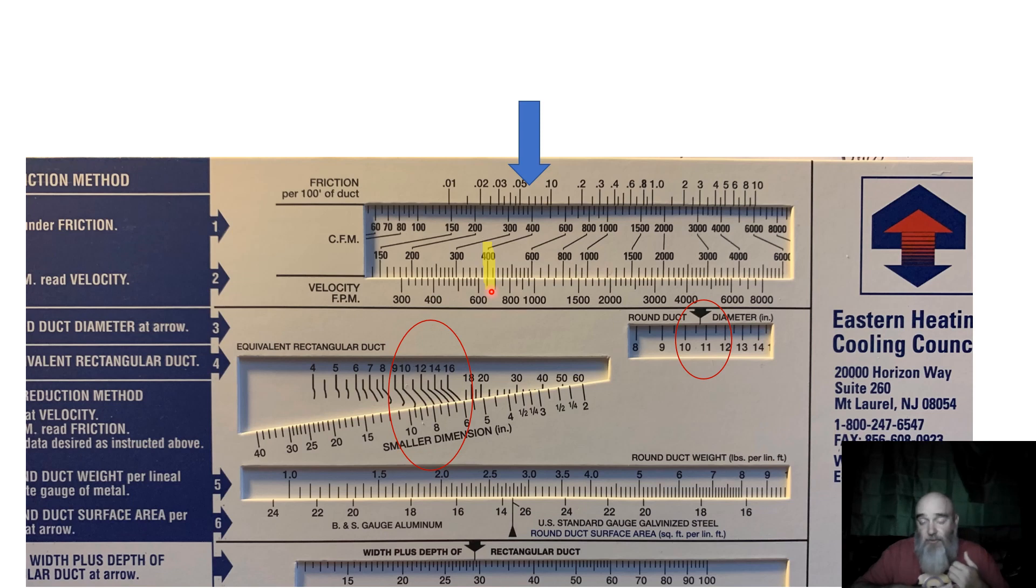So this is CFM with reference to my friction—another word for that could be pressure loss—and my CFM down here with reference to velocity is how fast the air is moving. Manual D caps velocity in the return duct at 900 feet per minute—I said that backwards—900 for the supply, 700 for the return.